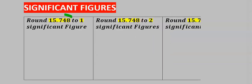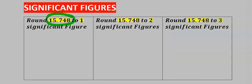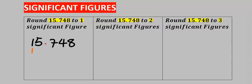We are going to apply this in all given questions. Consider 15.748 to one significant figure. 1 is the first significant figure and 5 is the second significant figure.